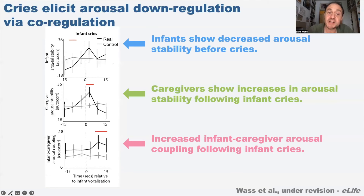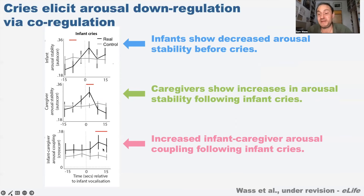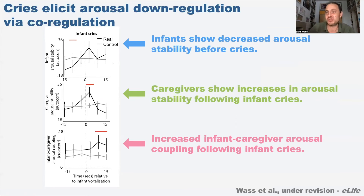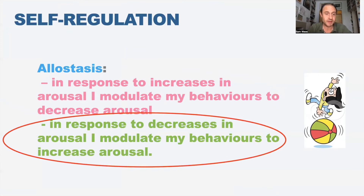If we look at infant arousal stability, we see that babies show increased arousal stability before cries. And when we look at the caregiver's arousal around cries, they show the opposite pattern - an increase in their arousal stability following infant cries. We also show increased infant-caregiver arousal coupling following cries. This is the caregiver engaging in co-regulation to help the child calm down, which is why the child calms down quickly following a cry. This is one half of allostasis: in response to increases in arousal, I modulate my behaviours to decrease arousal.